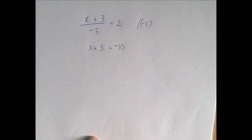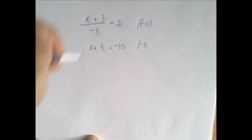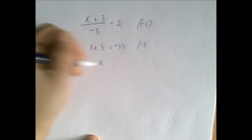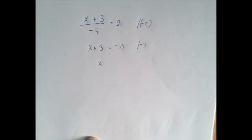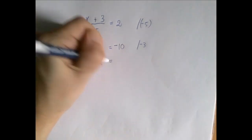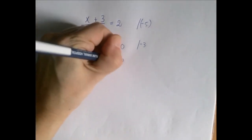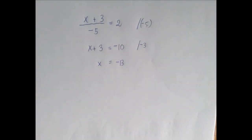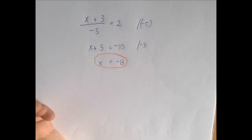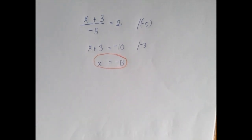Now we're going to subtract 3 from both sides. So x plus 3 becomes x, and negative 10 minus 3 is negative 13. So we think that the solution of this equation is negative 13.